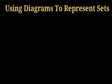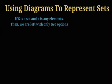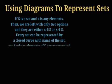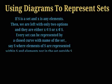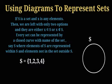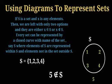If S is a set and x is any element, then we are left with only two options: either x belongs to S, or x does not belong to S. Every set can be represented by a closed curve with the name of the set. Elements of S are represented within the curve and elements not in the set are placed outside S.